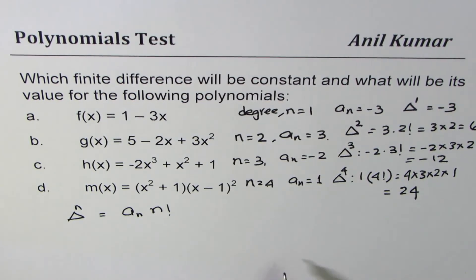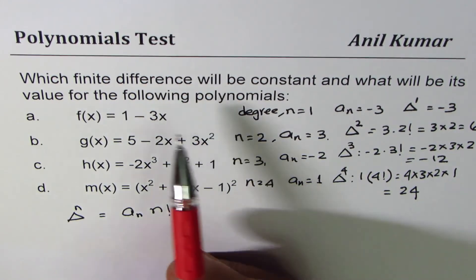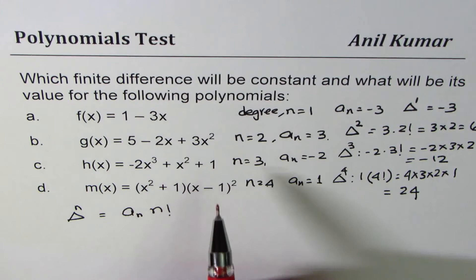Positive 24. So that is how you can find the value of finite difference also. Degree tells you which finite difference will be constant.